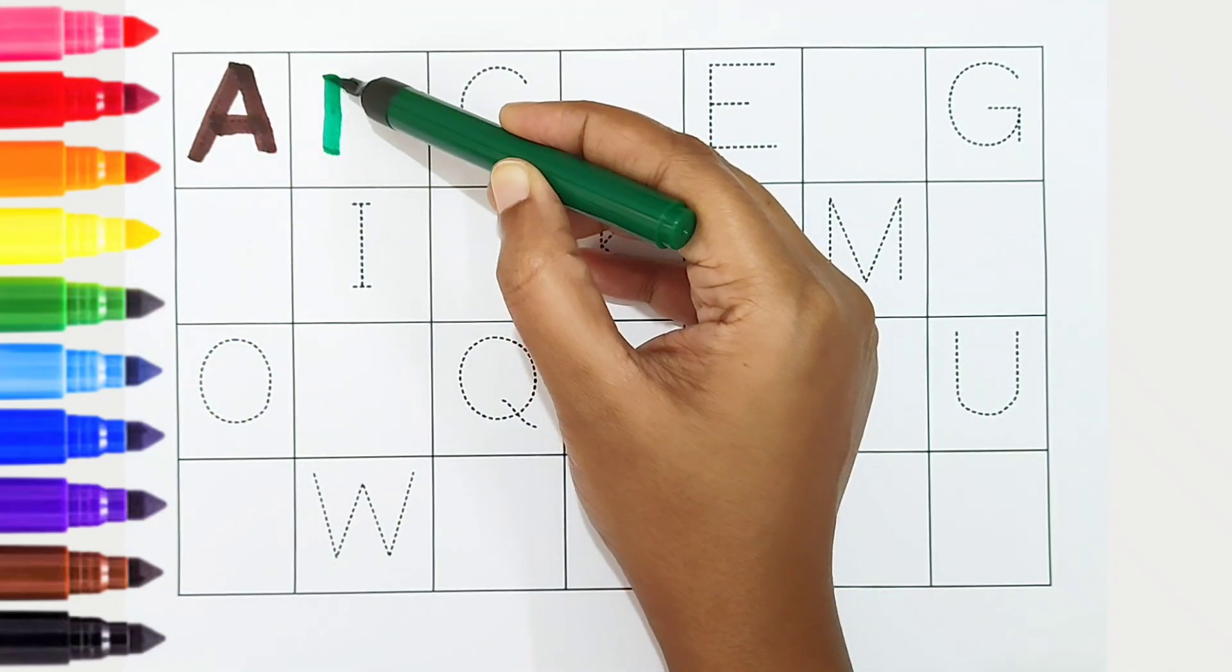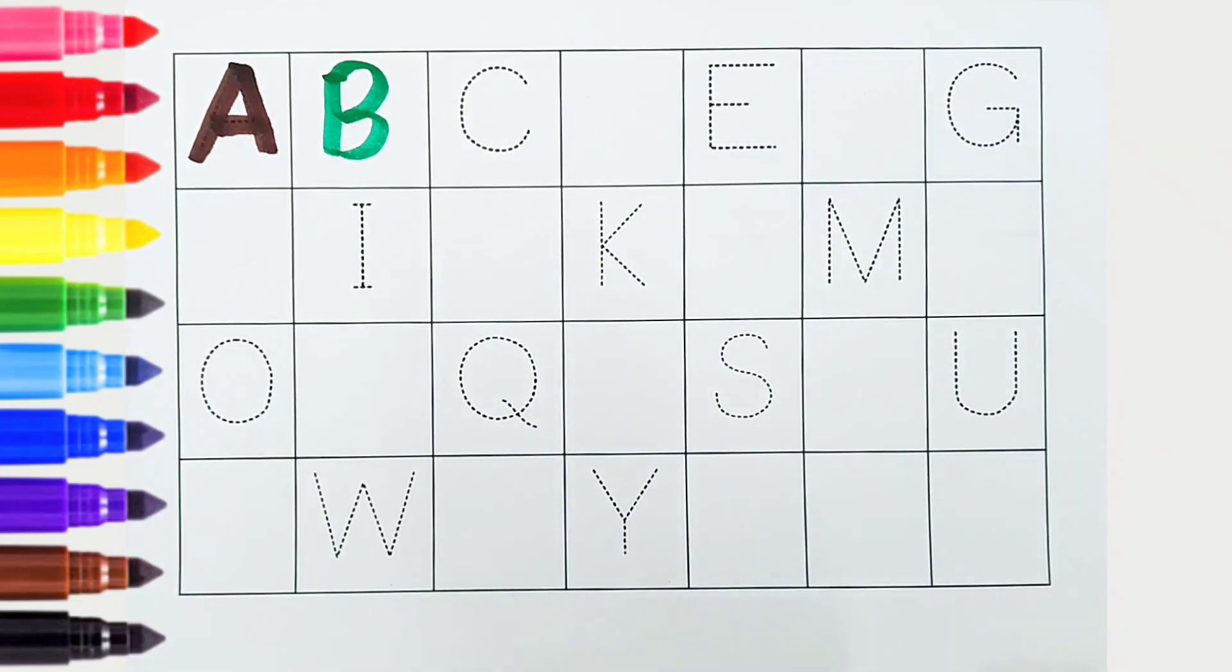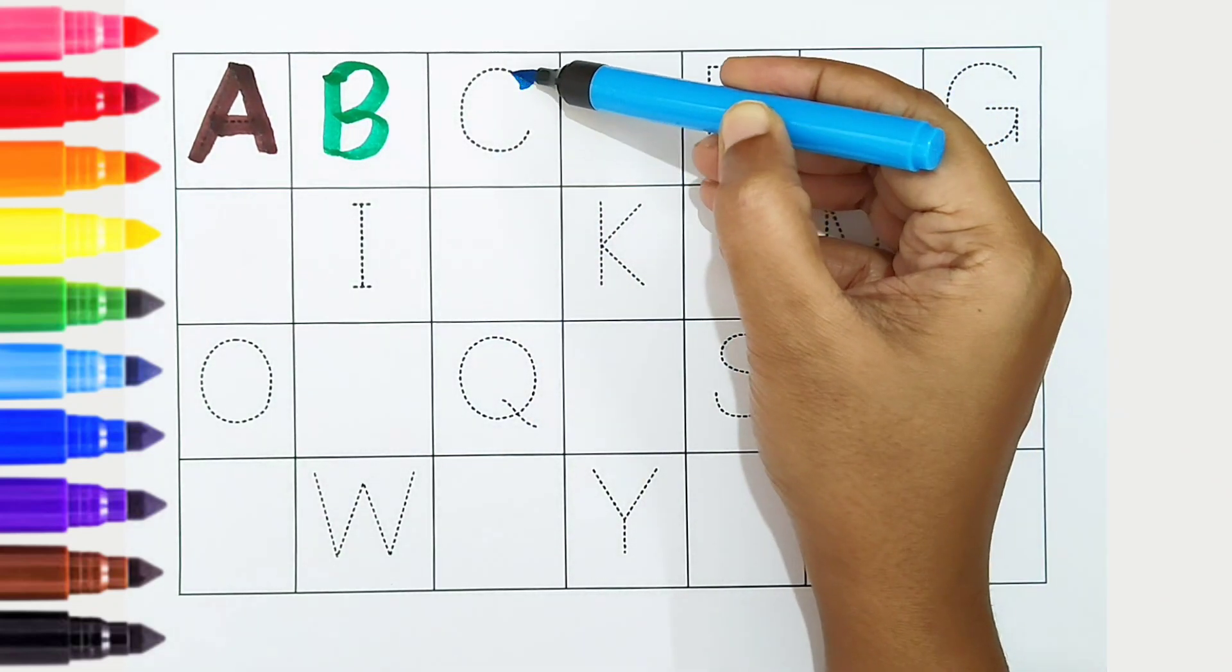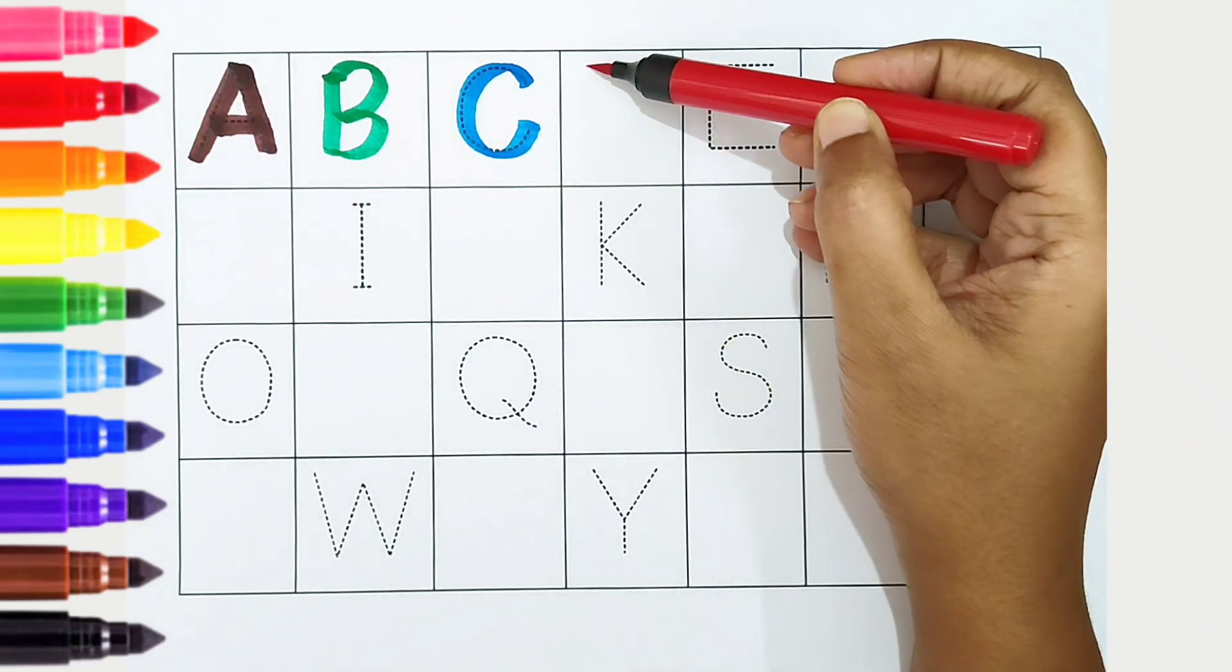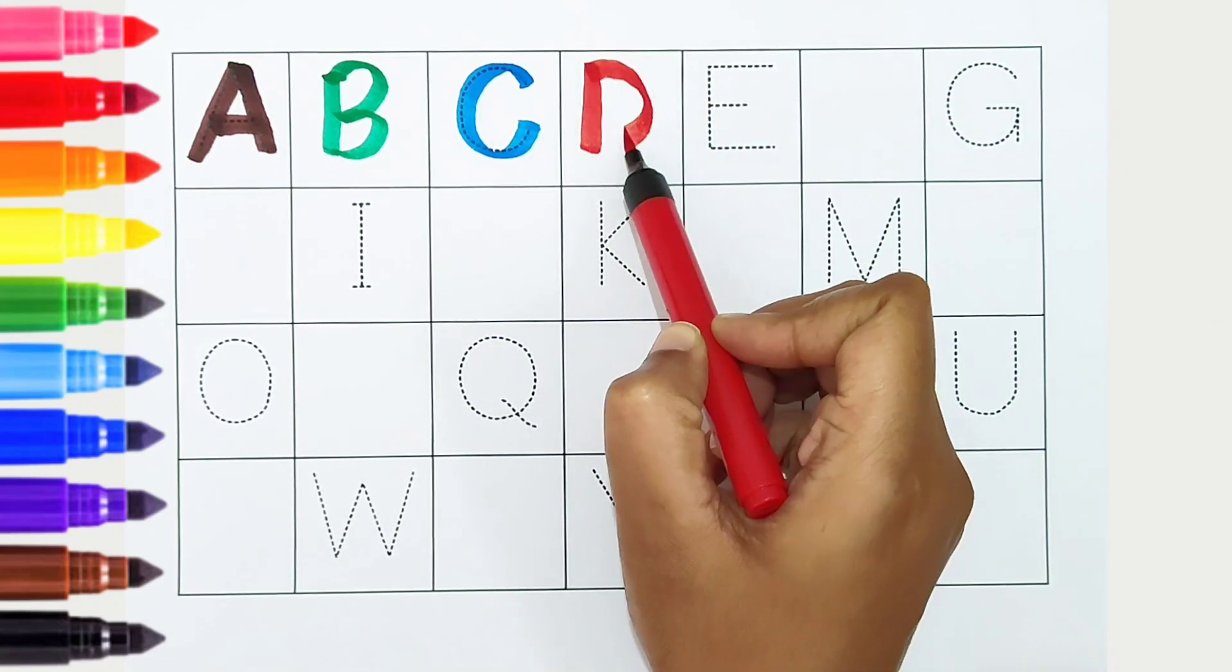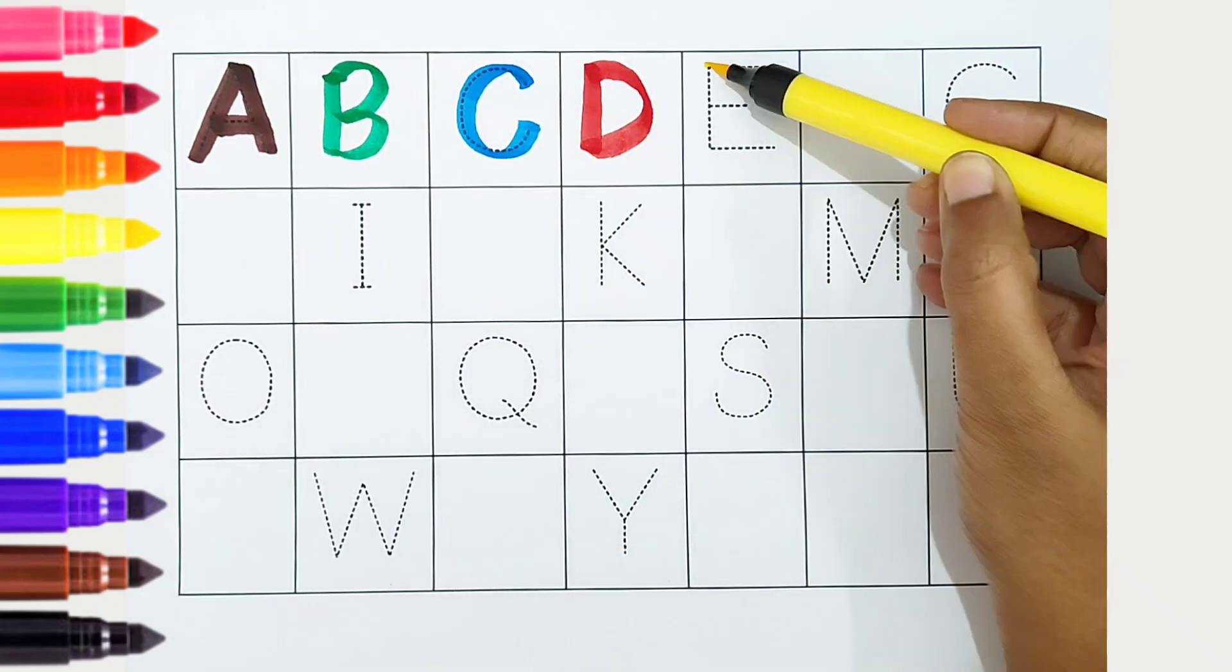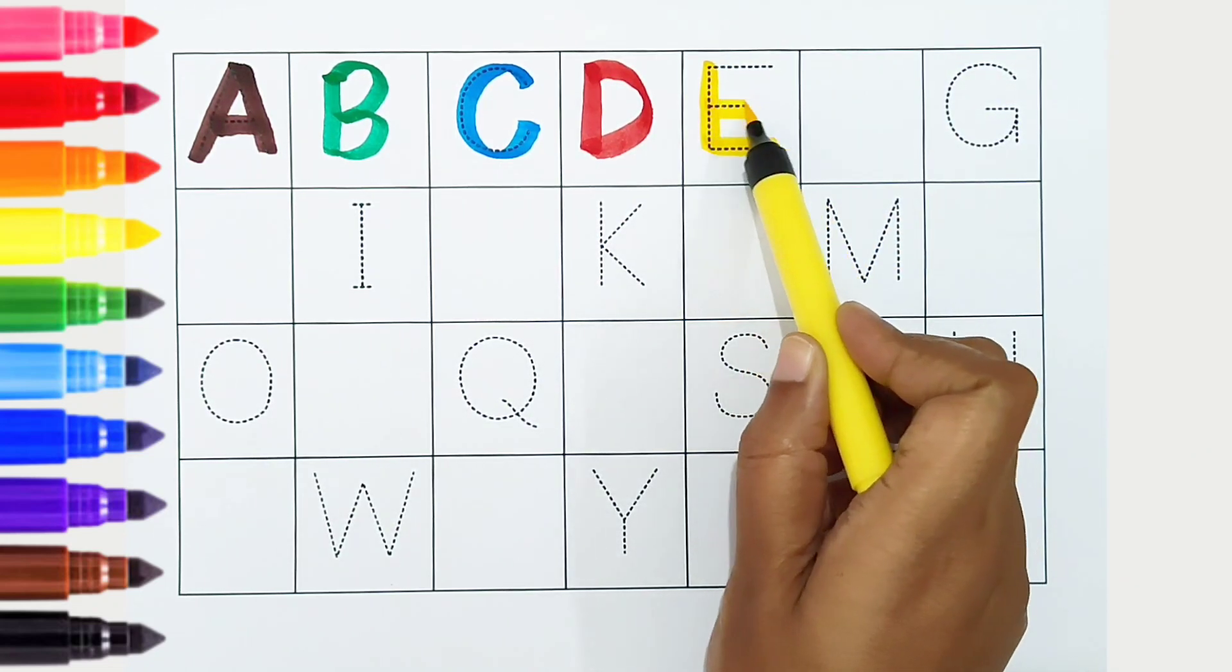Dark green color, B is for ball. C, light blue color, C is for cat. D, red color, D is for dog. E, yellow color, E is for elephant.